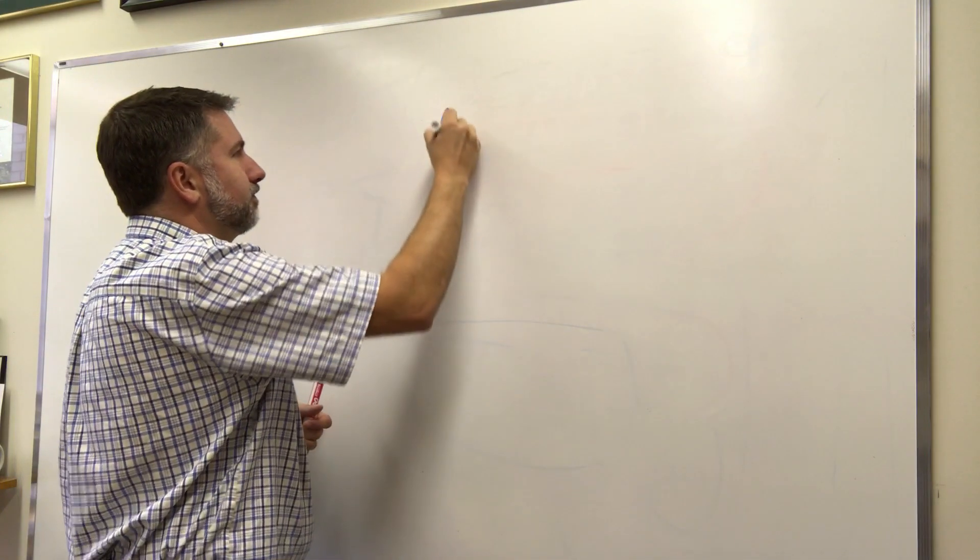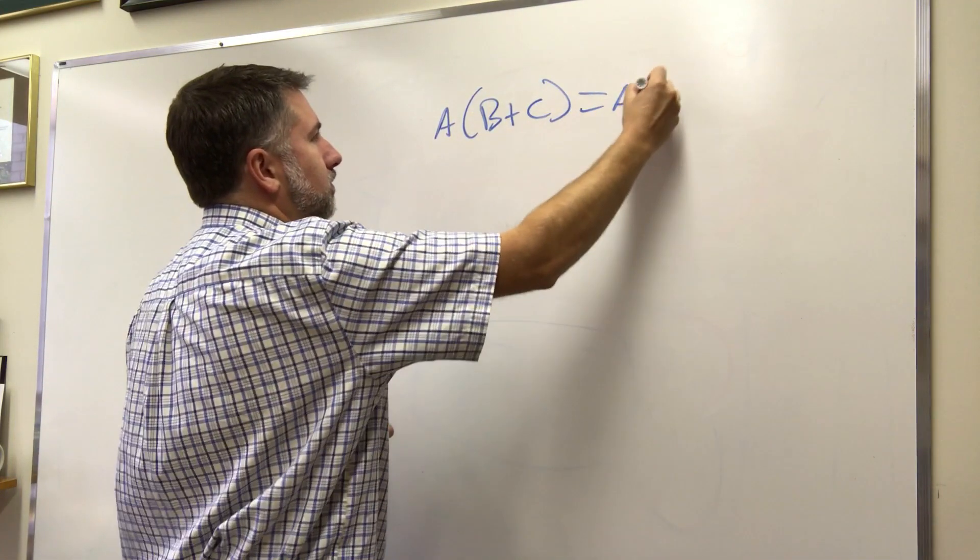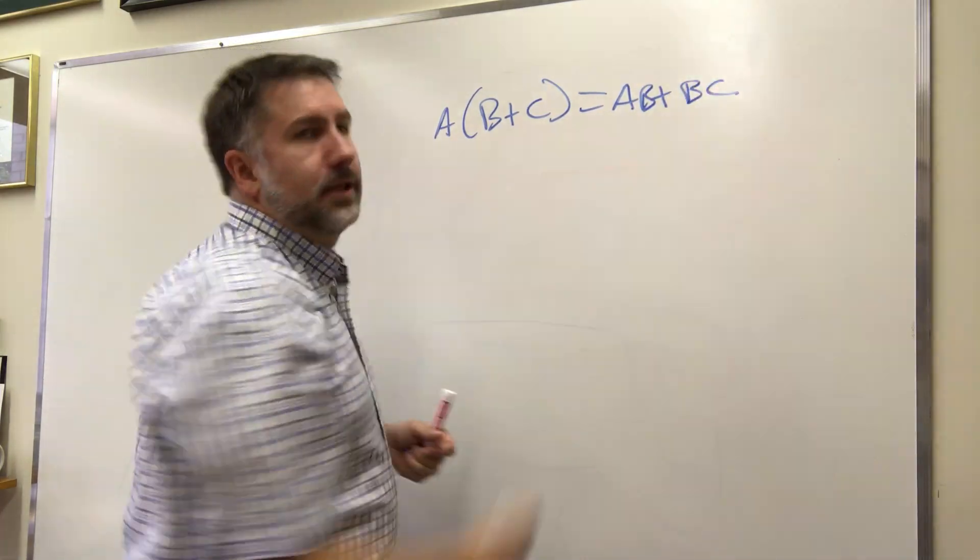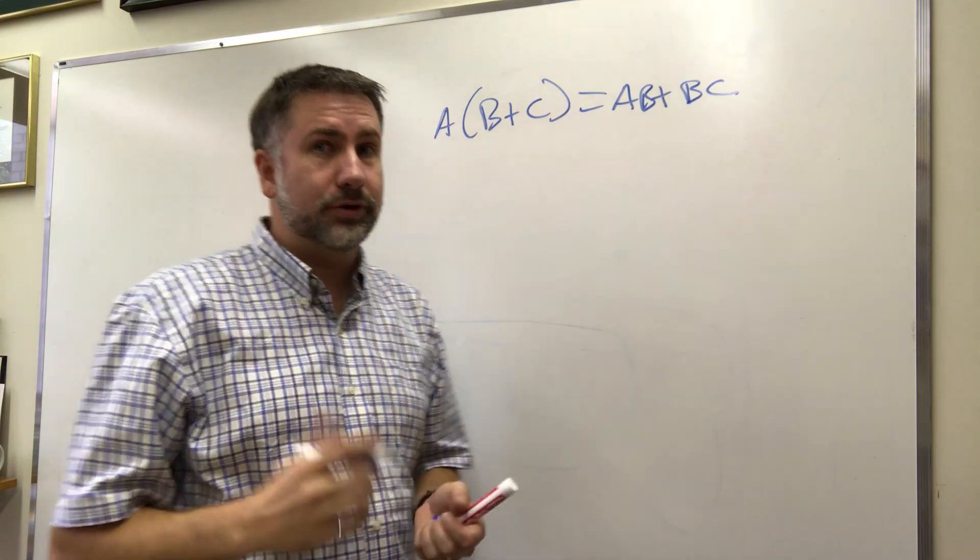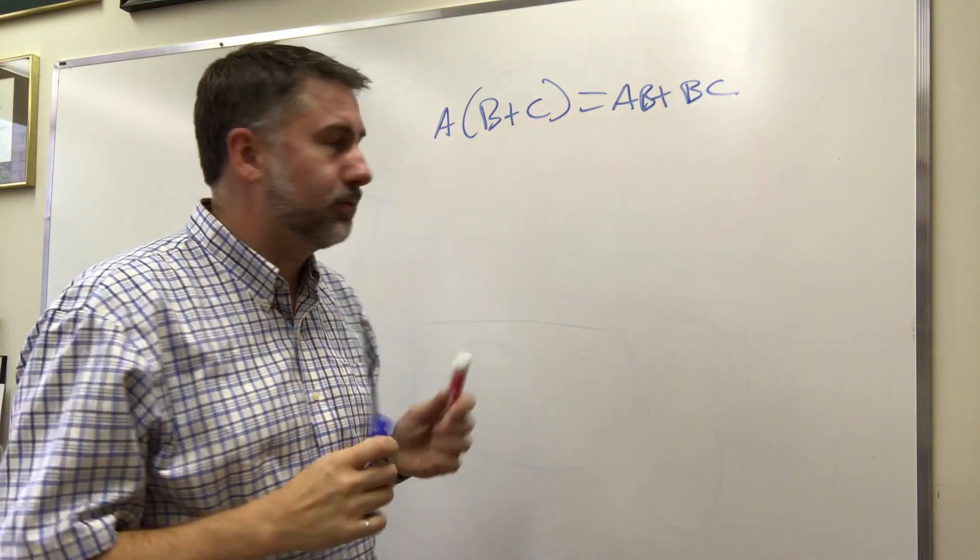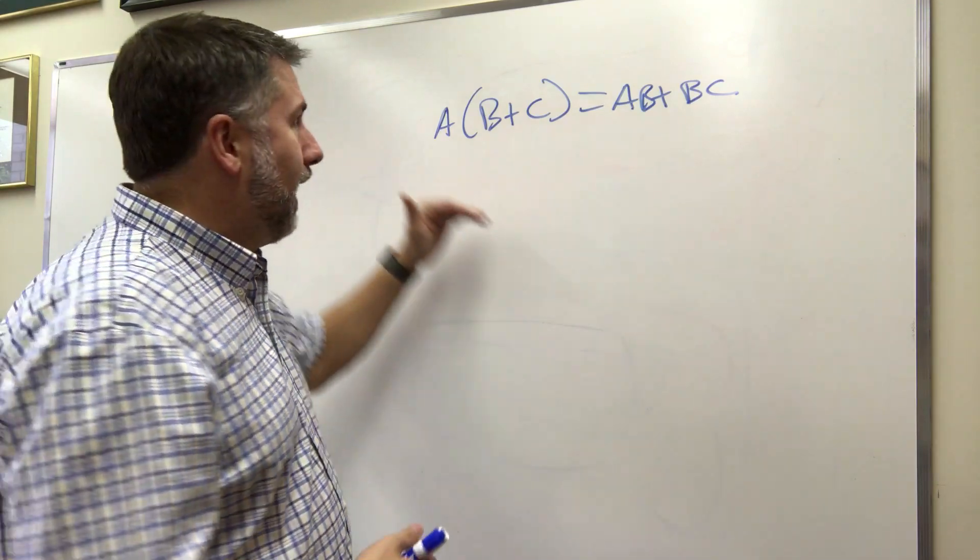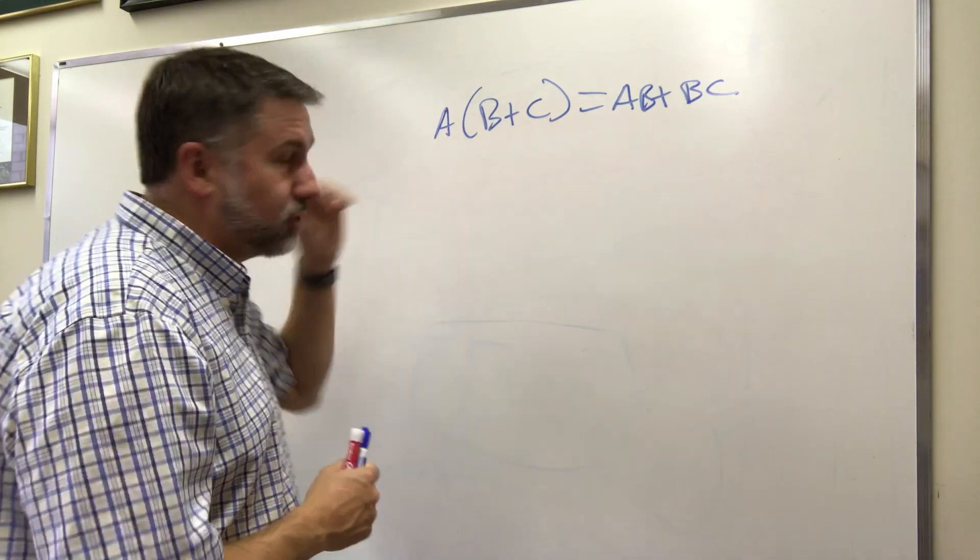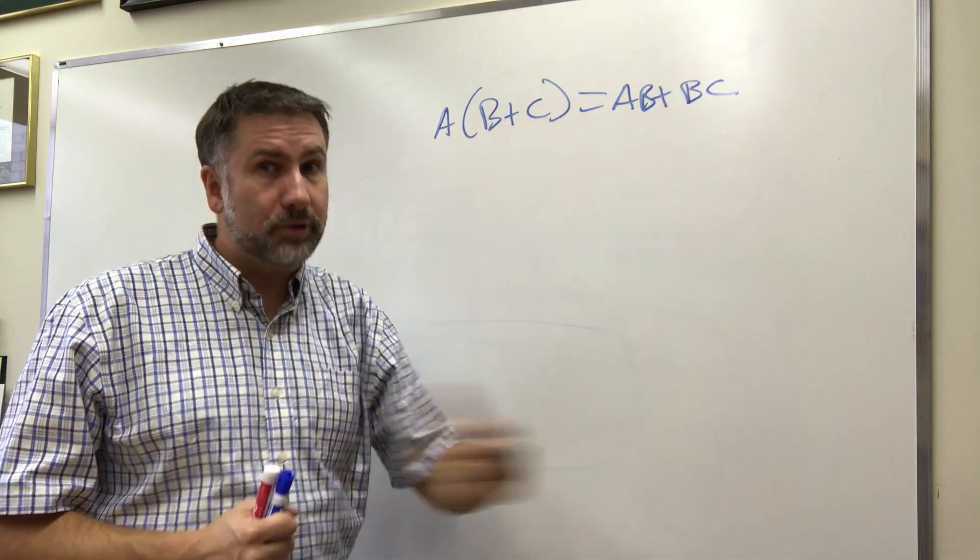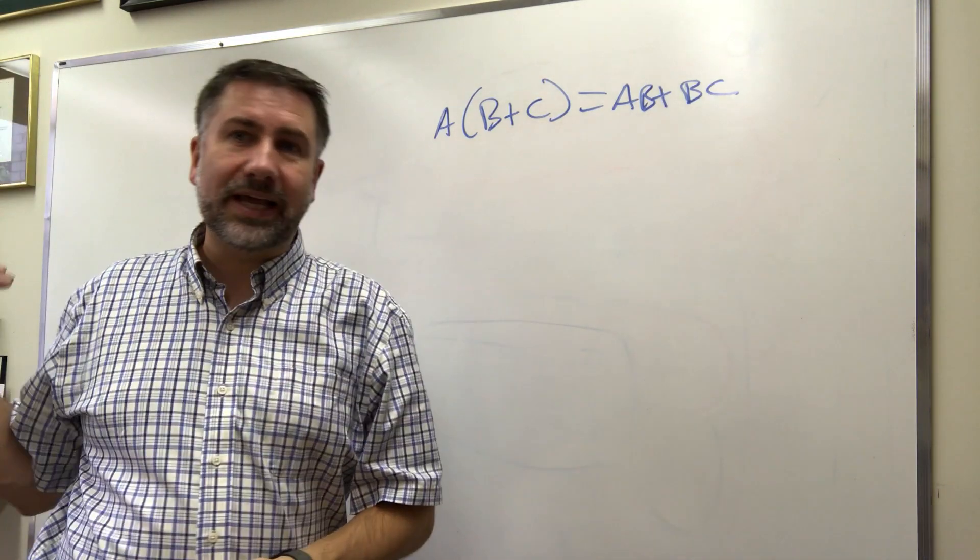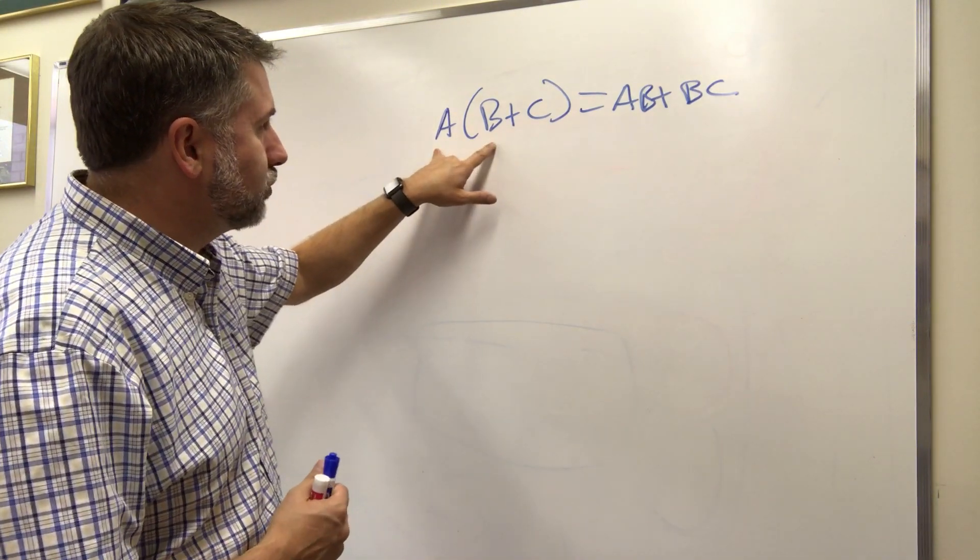Here's another one. A times B plus C equals AB plus AC. This we call distribution. This is a bit of a higher level rule. And this holds true in our traditional algebra for multiplication and addition. And it holds true also in Boolean algebra.